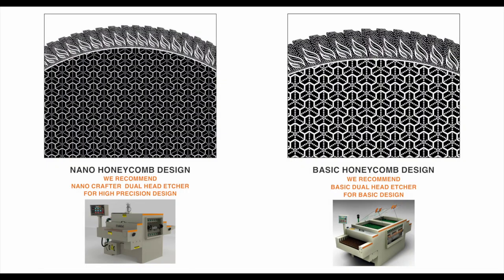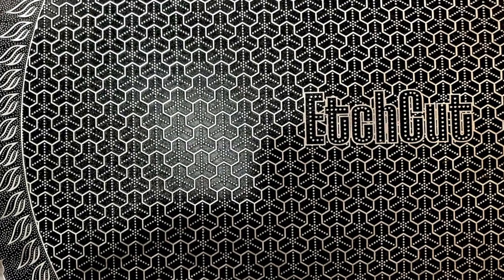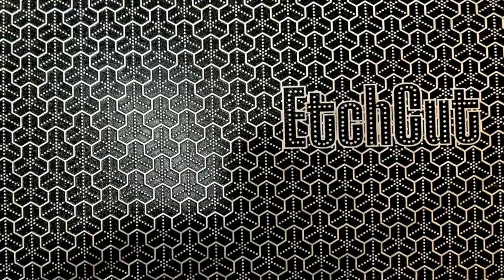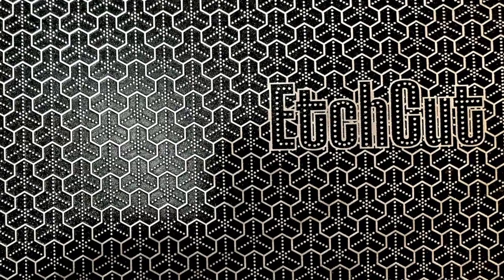Hier sind zwei Arten von Weibin-Mustern, die häufig verwendet werden. Es gibt zwei Arten von Design: Nano und Basic. Nano ist ein sehr hochpreisiges Design, das für den Exportmarkt bestimmt ist. Basic ist für den Inlandsmarkt. Wenn Sie hochpreisige Ätzmaschinen herstellen möchten, sollten Sie in Nanotechnologie investieren.